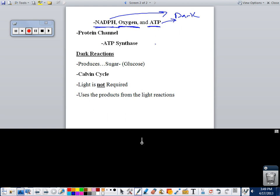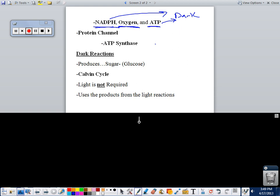Then the next part we have is dark reactions. The end result is to produce glucose, sugar. It's also known as the Calvin cycle. It's really important to remember that light is not required, it doesn't need it. Although the light reactions require sunlight, the products that have been produced in the light reactions can then be used in the dark reactions, whether there's sunlight or not.